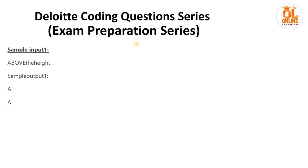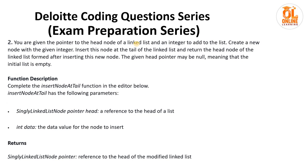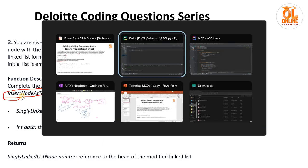That's our first question. The second and last question: you are given a pointer to the head node of a linked list. Add an integer to the list by creating a new node with the given data at the tail of the linked list and return the head of the node. The given head pointer may be null, meaning the initial list is empty — this is an edge case you need to handle. In the exam you'll have the skeleton code and just need to fill in the insertNodeAtTail function.